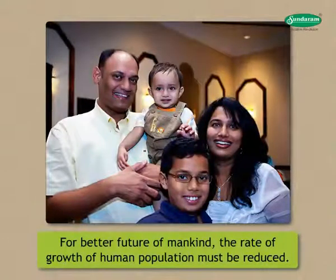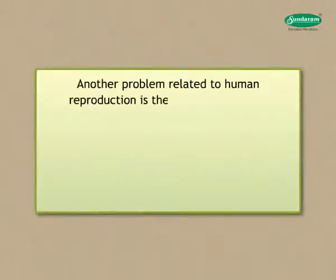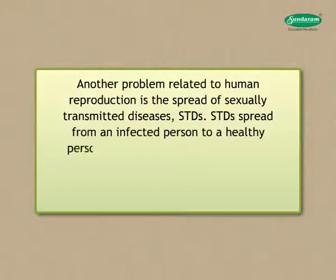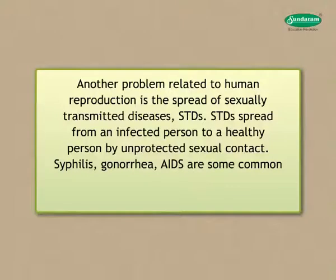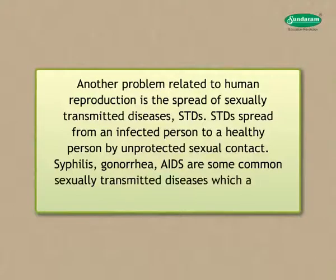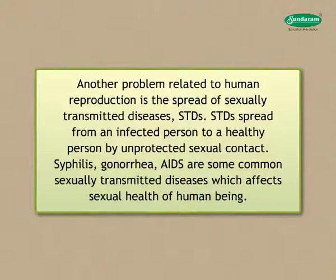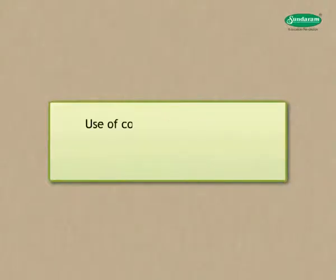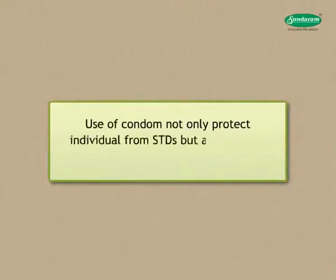Another problem related to human reproduction is the spread of sexually transmitted diseases (STDs). STDs spread from an infected person to a healthy person through unprotected sexual contact. Syphilis, gonorrhea, and AIDS are some common STDs that affect sexual health. To protect individuals from STDs, sex education and preventive measures are necessary. Use of condoms not only protects individuals from STDs but also helps in population control.